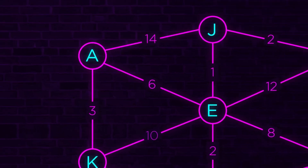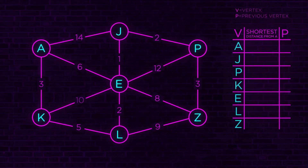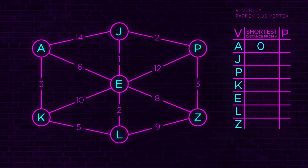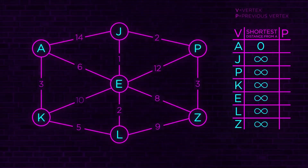Let's start with the first step. We're at A. How much does it cost to get to A? Well, it doesn't cost anything — we are already at A. So in the table, the shortest distance from A, let's fill that in as zero. Then the algorithm says: visit the unvisited vertex with the smallest known cost from the start vertex. All other vertices have no known costs, so mathematically we put infinity symbols, because we don't know those costs yet. We've been to A, so let's cross it out — we can't use it again.